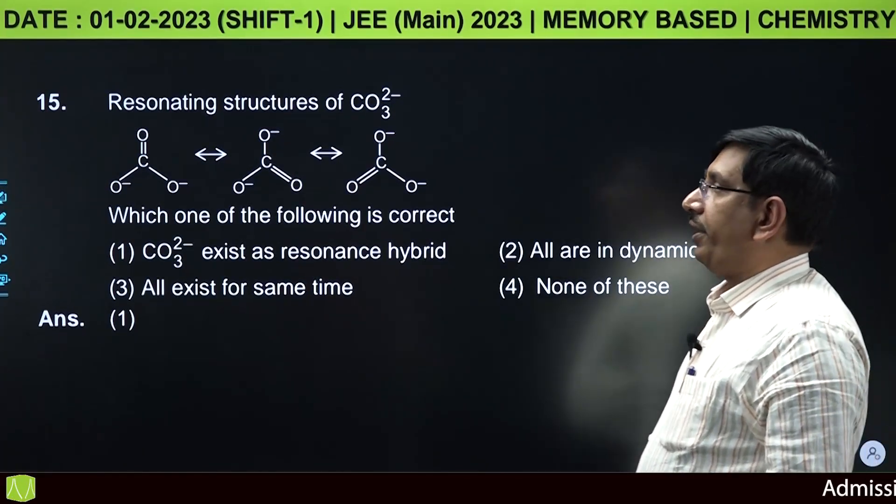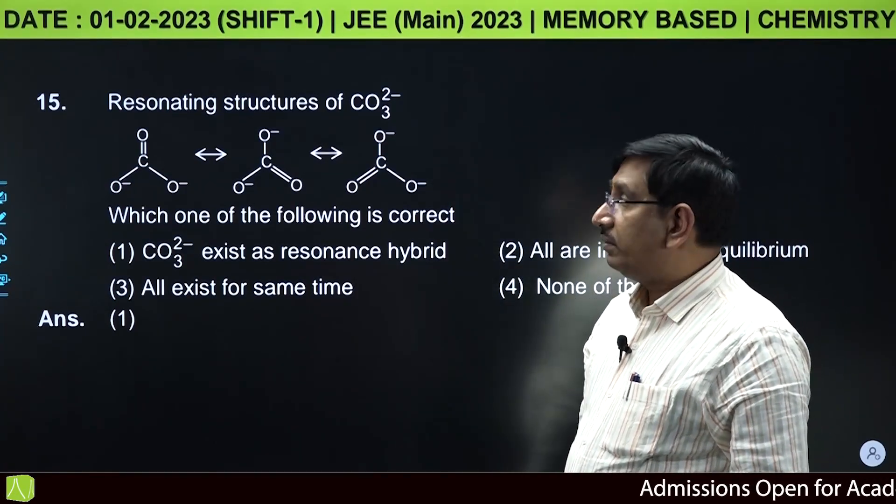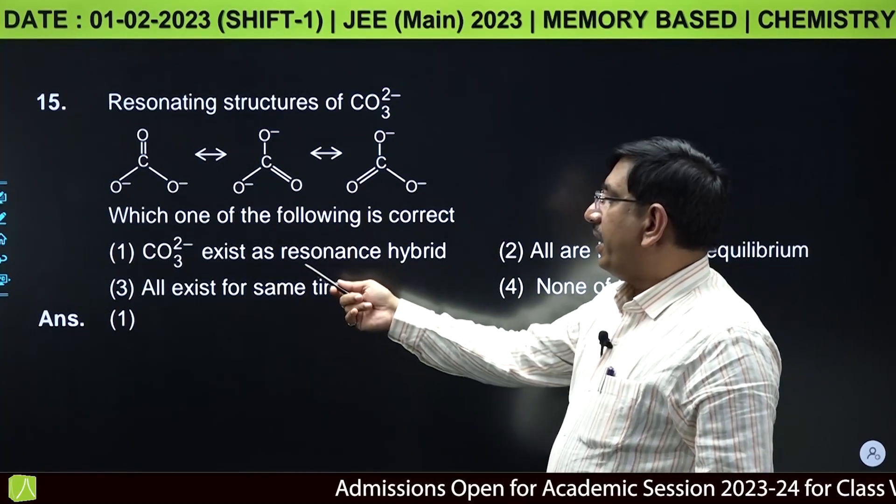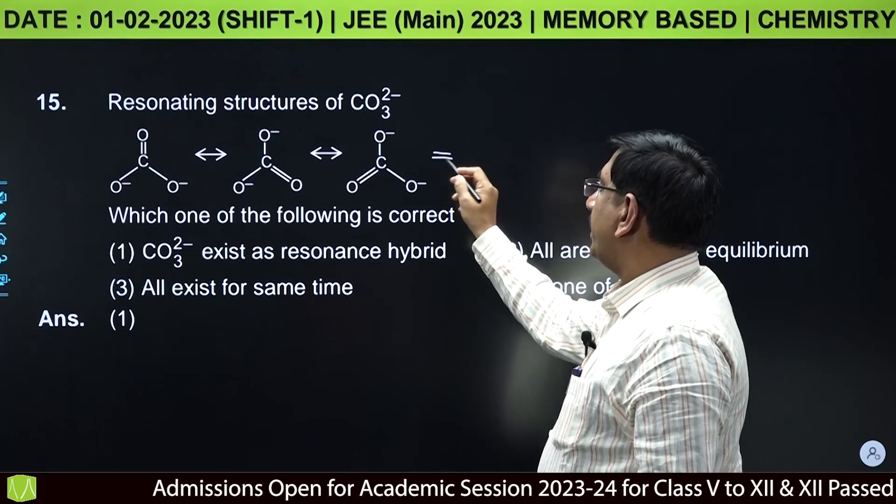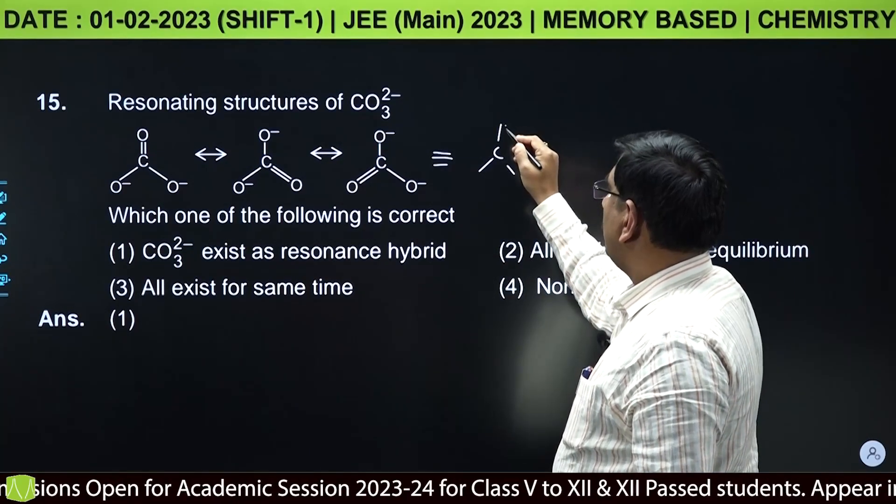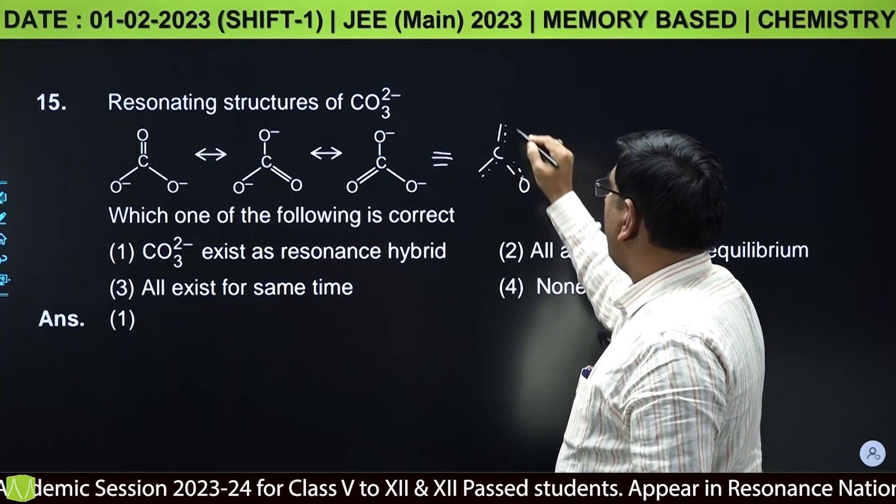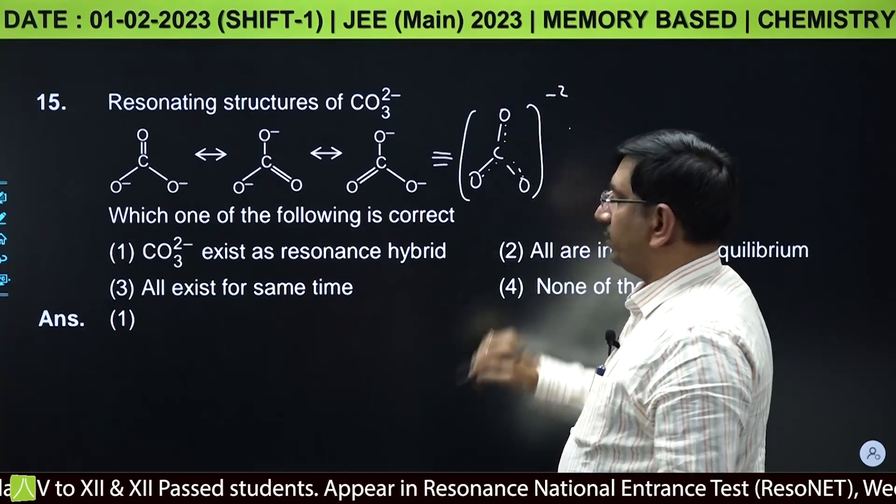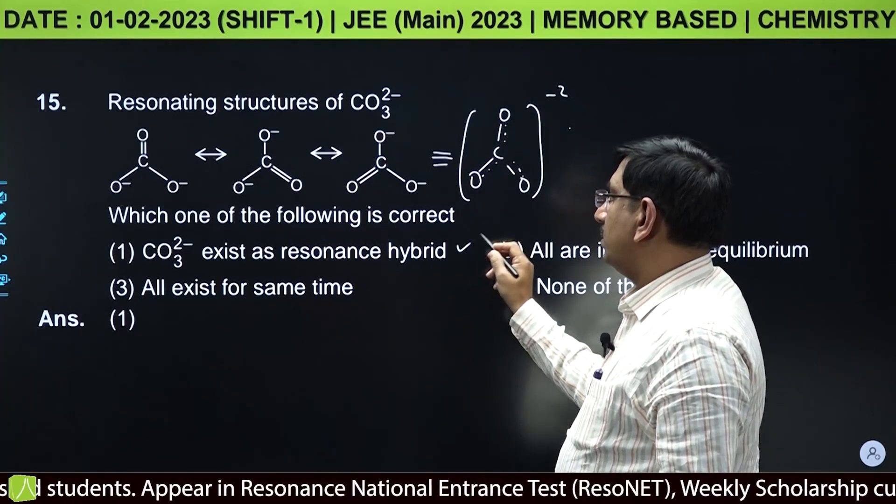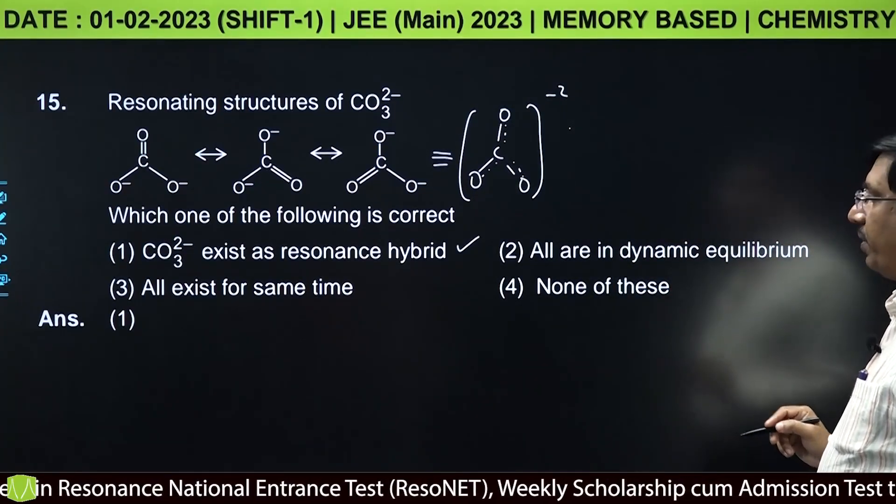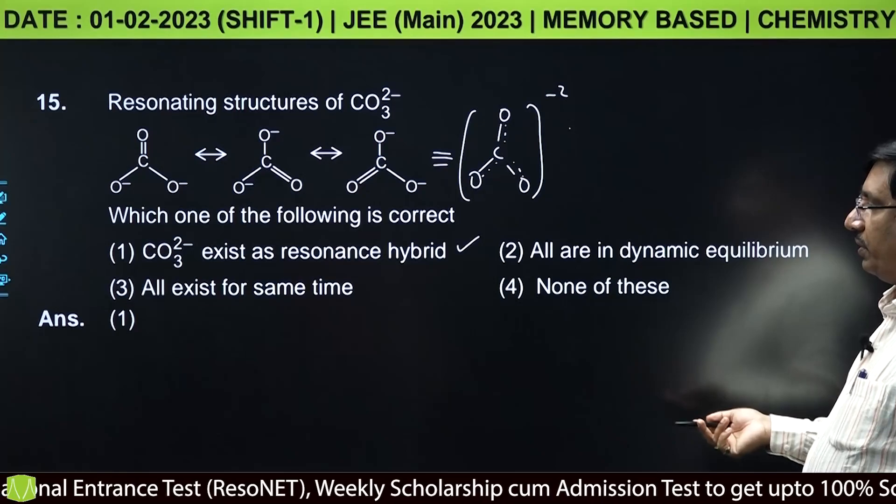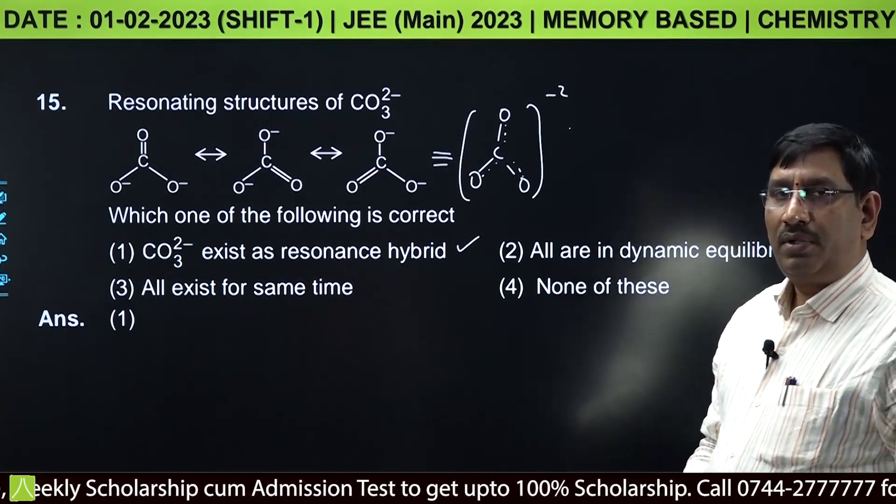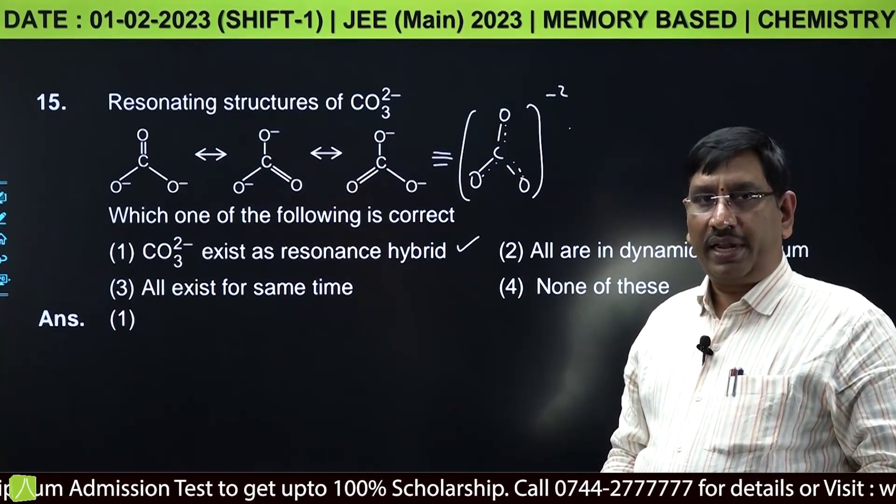From chemical bonding: resonating structures of carbonate ion are given. Which statement is correct? Carbonate exists as resonance hybrid - yes, it can exist as resonance hybrid structure. In the given options, first one is correct. That's it in this paper, we will meet in the next paper, thank you.